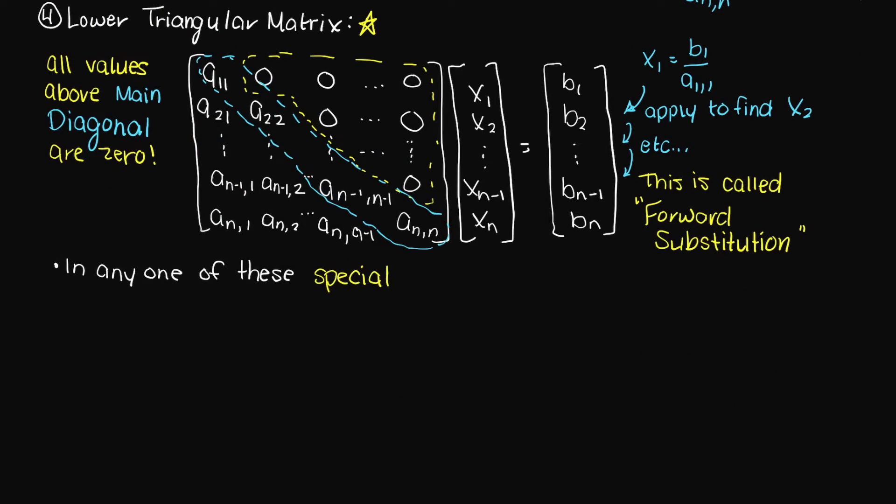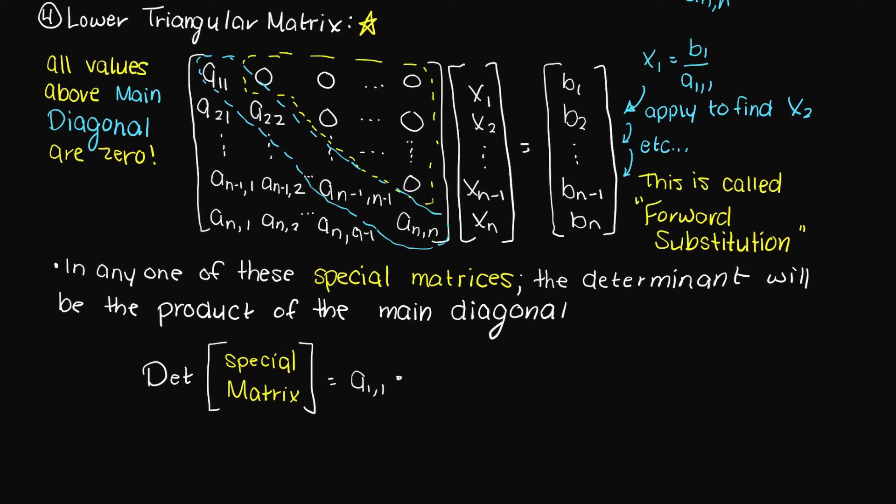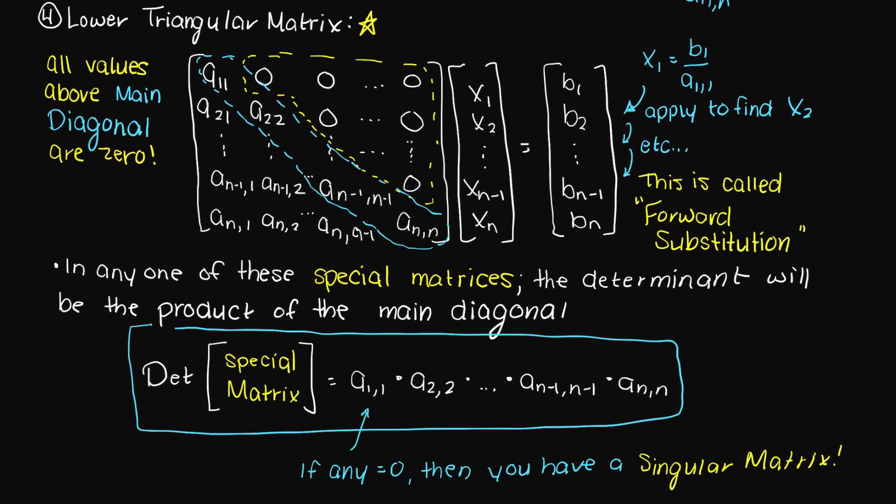Also, another interesting thing to note is that when you have your matrix in one of these special matrix configurations, the determinant is simply the product of all of the diagonal components. Therefore, if any one of them is zero, your determinant will be zero, and thus will instantly tell you if your matrix is singular and does not have a unique solution.